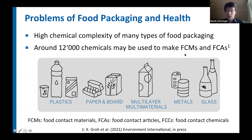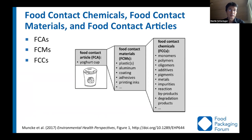We will use the abbreviations FCMs and FCAs, and also FCCs for food contact materials, food contact articles, and food contact chemicals, as shown here in more detail. A food contact article is, for example, a yogurt cup. It consists of food contact materials such as plastics, aluminum for the lid, coatings, adhesives, and printing inks.